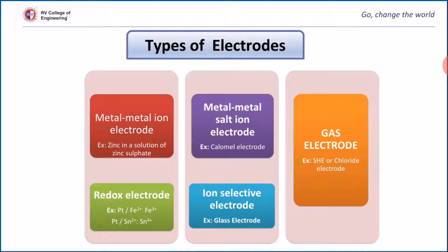Redox electrode: an inert electrode is in contact with a solution containing metal ions of different oxidation states. For example, in a beaker containing ferrous ammonium sulphate and a platinum electrode, when an oxidizing agent is added, ferrous ions present in the solution get converted to ferric ions. Now on the surface of the platinum electrode, two oxidation states are present: Fe²⁺ and Fe³⁺. This is an example of a redox electrode.